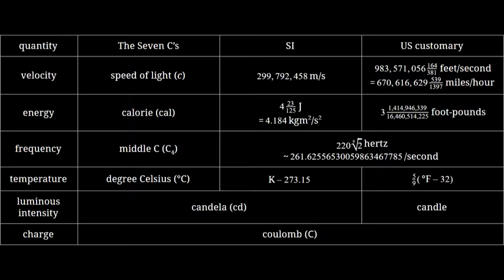There's also resistance, which is voltage divided by current, giving you calories per middle C coulomb squared, equal to about 0.016 ohms. And of course you can't have resistance without conductance, so the unit of conductance is just the reciprocal of the unit of resistance, so it's like 62.5 siemens.